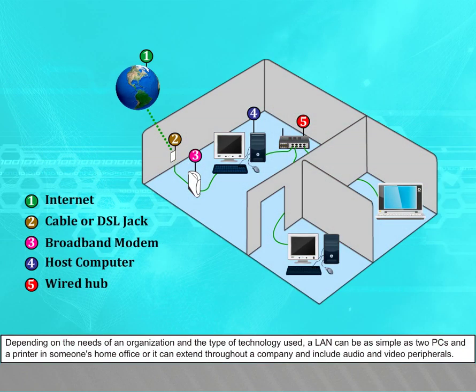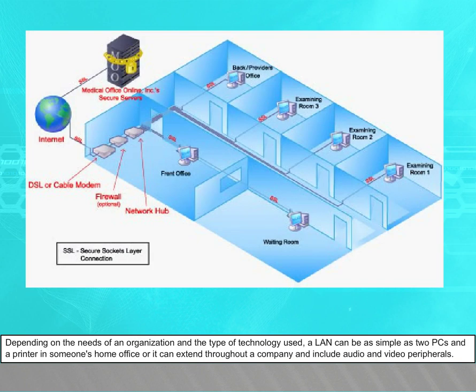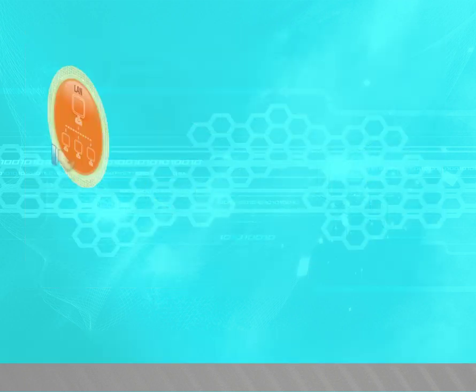Depending on the needs of an organization and the type of technology used, a LAN can be as simple as two PCs and a printer in someone's home office, or it can extend throughout a company and include audio and video peripherals.